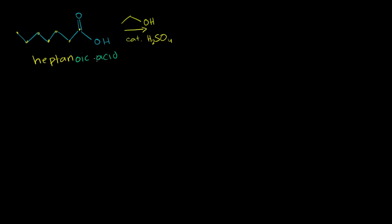Let's see what happens if we have heptanoic acid reacting with — this is one, two carbons, and then it has an OH group, so this is ethanol. That's what the OH group does; it makes this an alcohol. And it's in the presence of a sulfuric acid catalyst. This right here is sulfuric acid, one of the stronger acids.